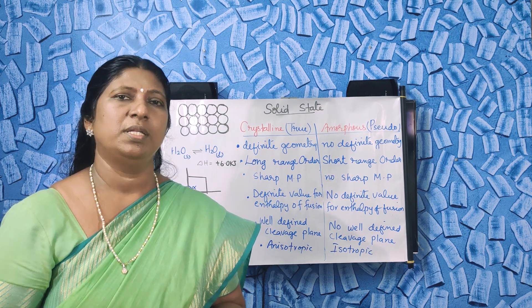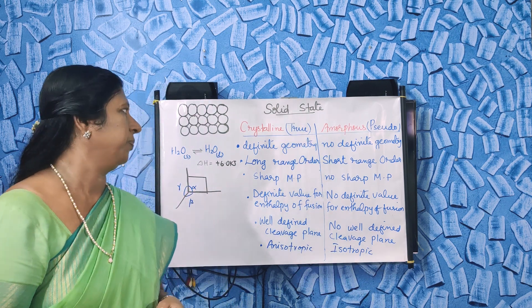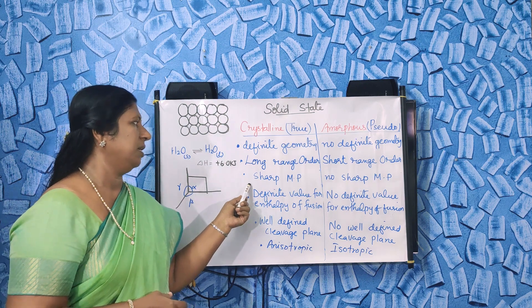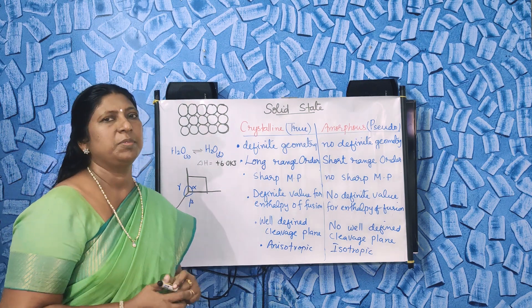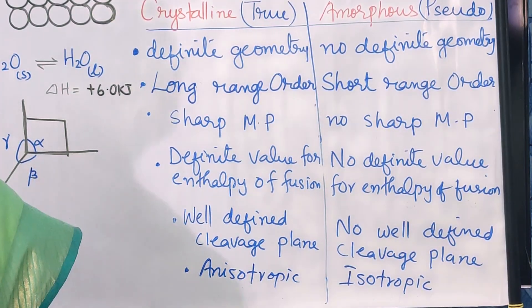But amorphous solids have only short range order. Another difference is that crystalline substances have a sharp melting point.